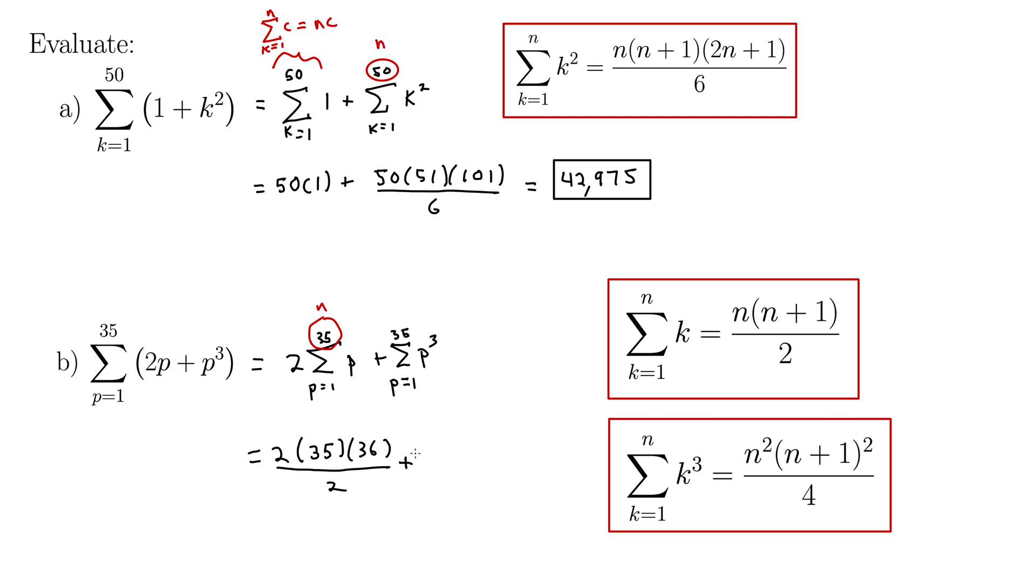Plus, and then we have our p cubed, which we know becomes, when we take the sum of it, n squared times n plus 1 squared, all over 4. Where again, n is 35, so this becomes 35 squared, so we still certainly need a calculator for this, times 36 squared, all over 4. Putting this into a calculator gives us 398,160.